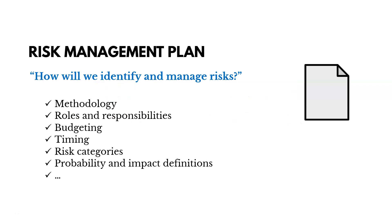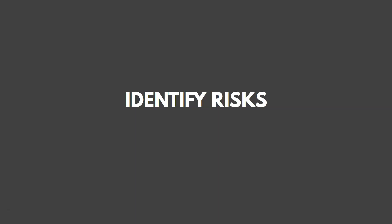As we start planning how we're going to conduct risk management, we generate a risk management plan. It includes things like what method we're going to use to identify and handle risks, who's going to be responsible, whether we're going to budget anything for handling risks, what the risk categories are, and how we're going to define probability and impact for our project.